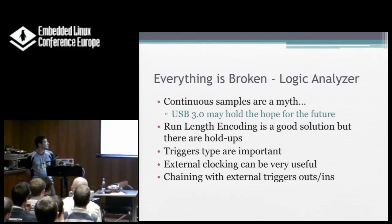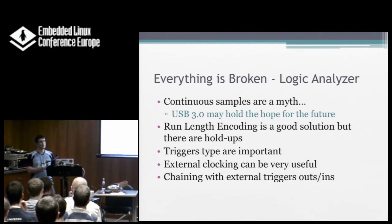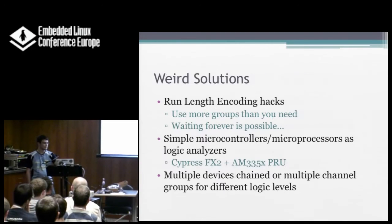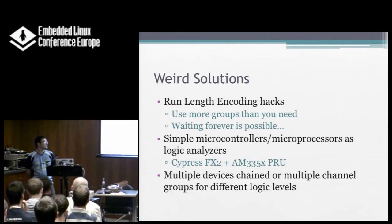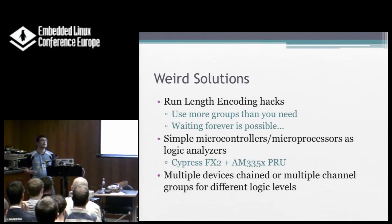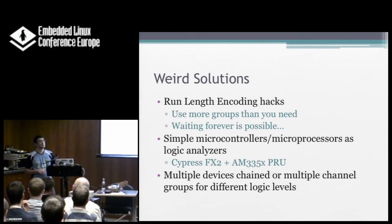Chaining with external triggers in and out — you can do that with the OpenLogic Sniffer. It's already 32 probes, but the problem is it can only debug at one logic level. So if you had two, you could have them tied together — one debugging a 3.3V logic signal and another at 1.8V. With run length encoding, there are a few interesting things: if you're debugging two probes, you might enable only one channel group. The value is going to be 8 bits, and the count is also 8 bits. So if you have a signal that's not changing, you're running through that buffer really fast. Sometimes it makes sense to enable a second group, so you have 15-16 bit counts even though you're not using those other value bits.